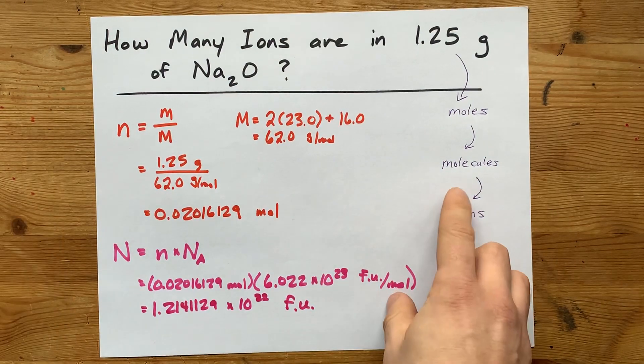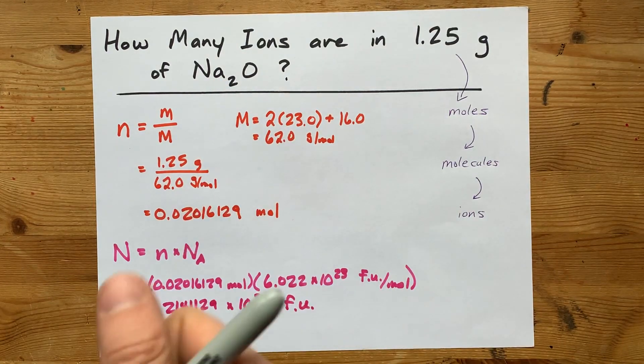1.2141129 times 10 to the power of 22. And this is formula units for me. And then lastly, we have to figure out how many ions are in each formula unit.